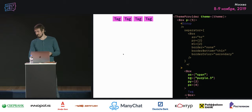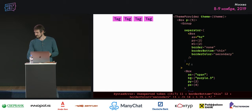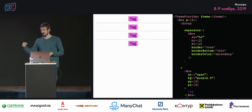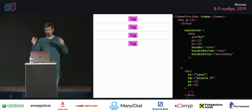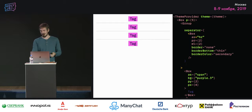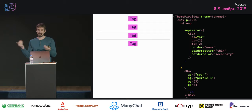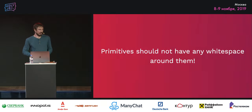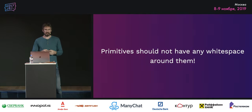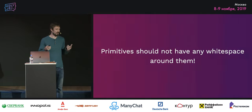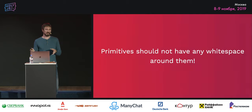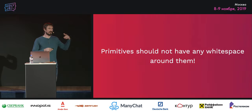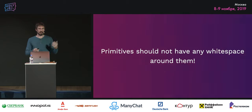The Group component can be composable — if I add a separator that renders an HR tag, it goes from a list of tags to a stack with dividers. The separator accepts whatever component you pass. The key idea: primitives should not have any white space around them — let layout primitives control the space around.